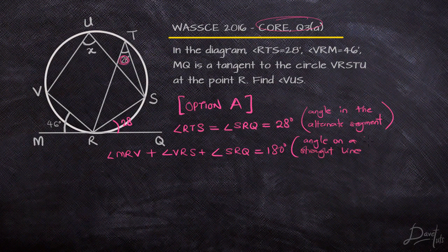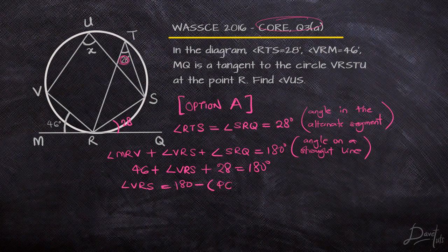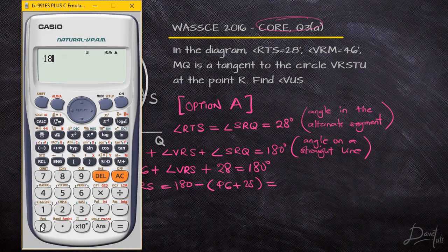Since angles on a straight line — the straight line MRQ — all sum to 180°, we can find the angle VRS. Substituting the values of MRV and SRQ, VRS equals 180° minus (46° + 28°), which gives us 106°.